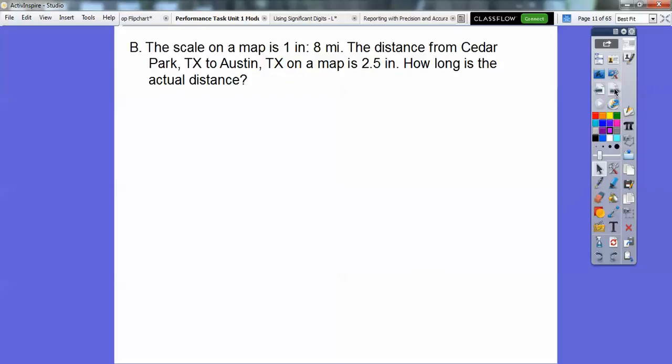So a scale on a map. Remember we did ratios and proportions. So here's a ratio right here, a scale on a map is 1 to 8. The distance from Cedar Park, Texas to Austin, Texas on a map is 2.5 inches. Remember, it's 1 inch equals 8 miles. So how long is the actual distance? We're going to write a scale as the fraction. The book chose to write the actual over the map. I would have done the map over the actual, but it doesn't matter, you guys. Just as long as you're consistent.